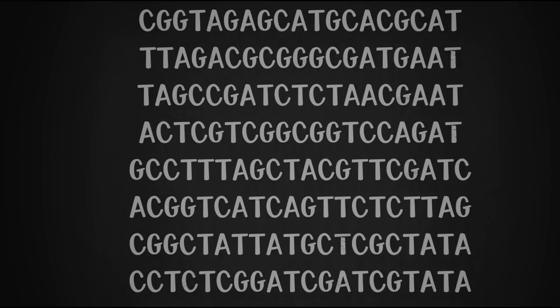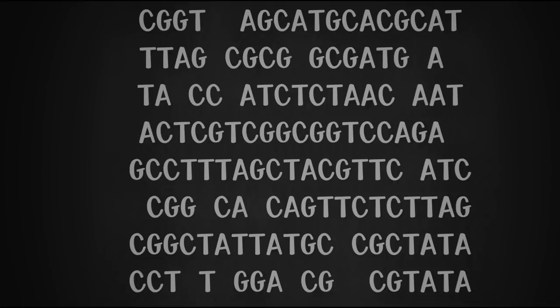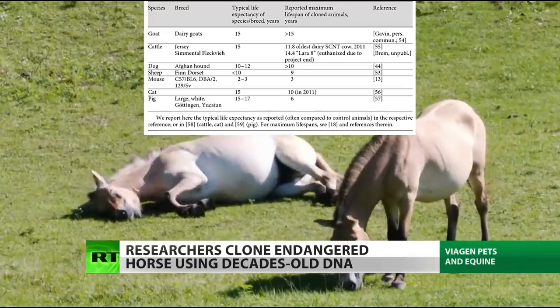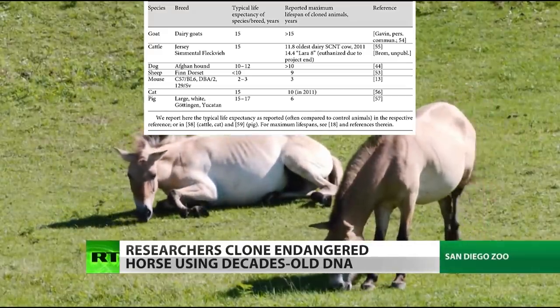If aging was a loss of genetic information, then that would be the end of it. Nothing we could do. Yet we now know that we don't lose any genetic information as we get older. We can see this in clones which go to live normal and expected lifespans.